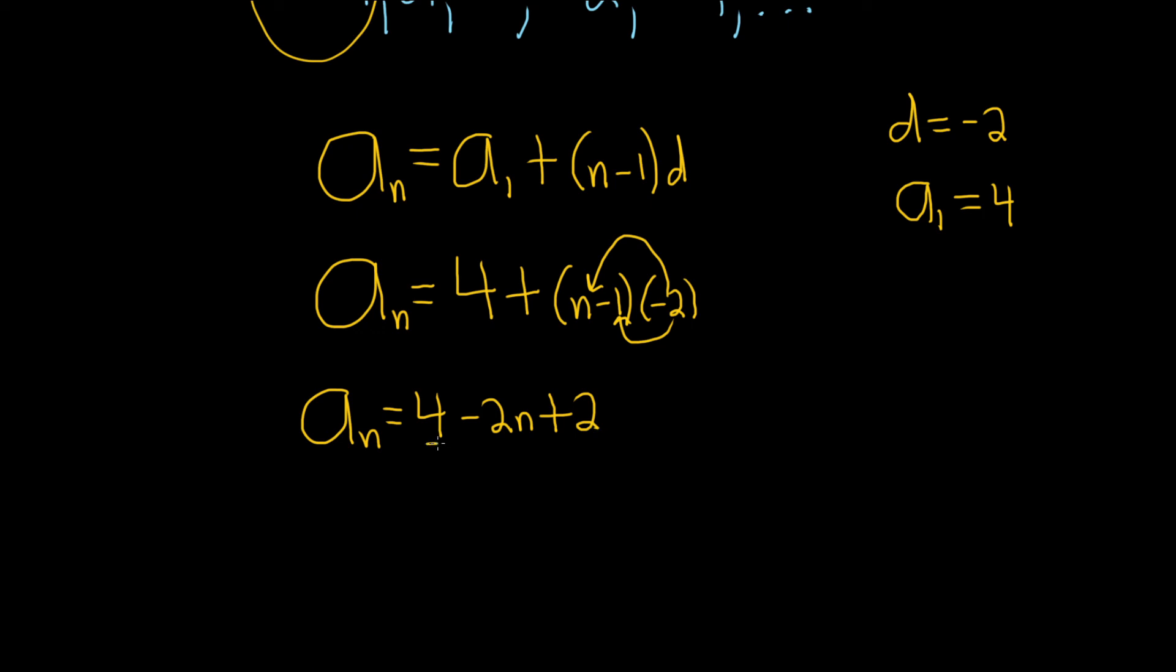It looks like we can combine the 4 and the 2, because 4 plus 2 is 6. So a sub n is equal to 6 minus 2 times n. And so that would be the formula for the nth term or the general term of our arithmetic sequence.